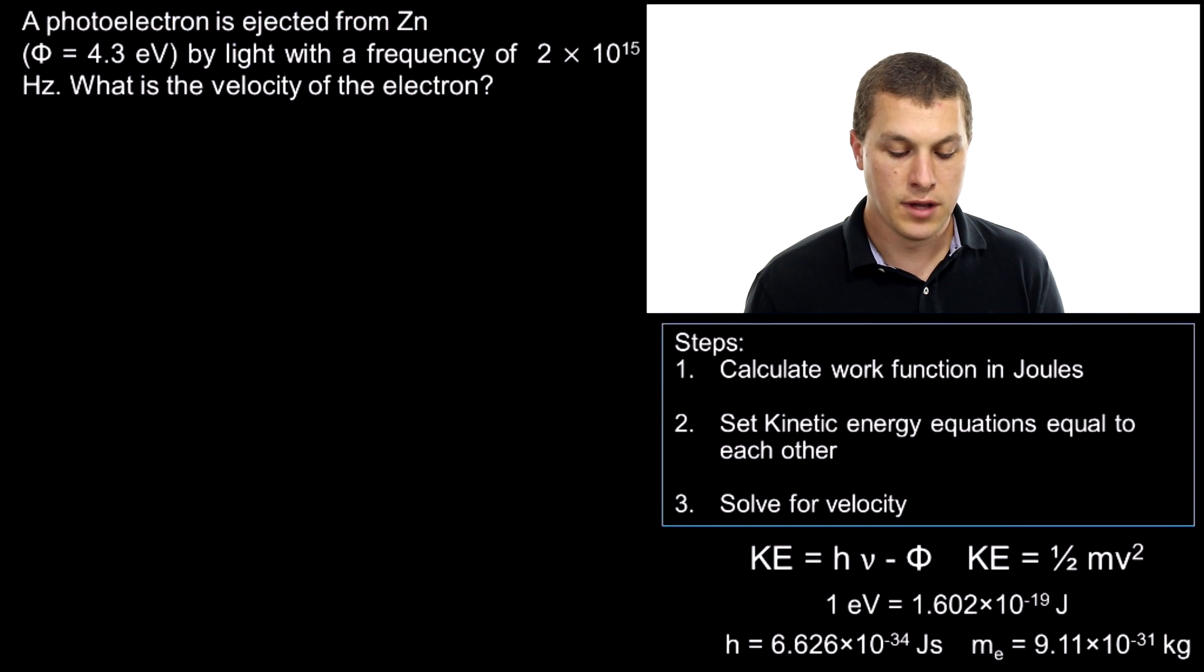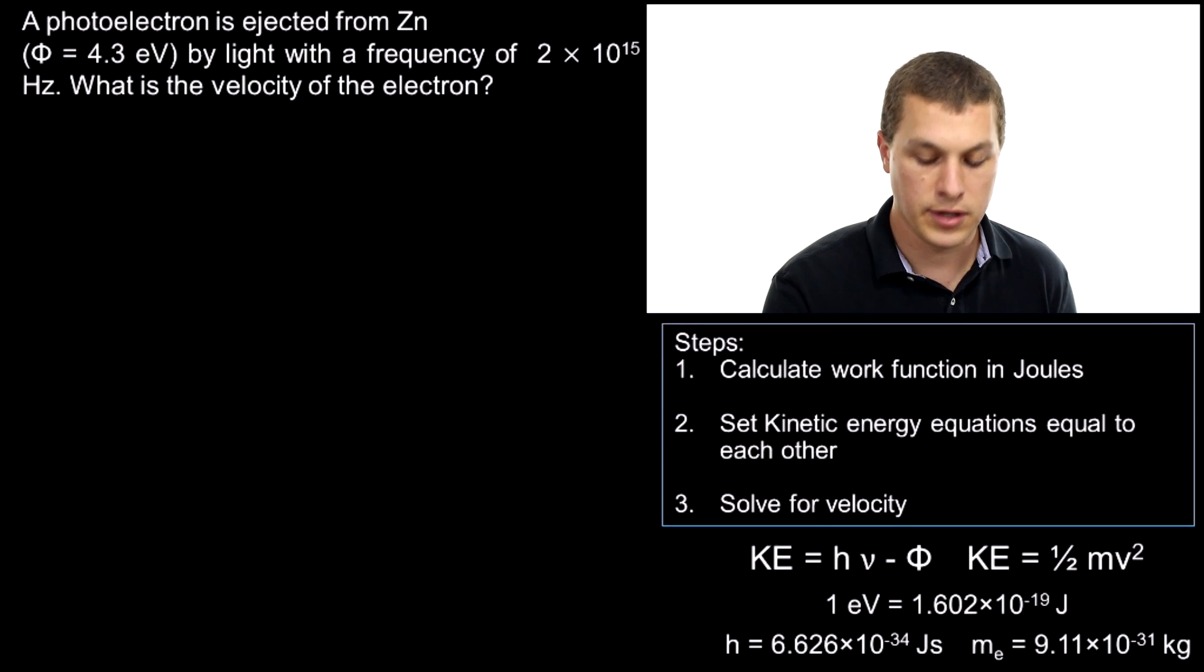The question might look like this: a photoelectron is ejected from zinc (Φ = 4.3 eV, that's our binding energy) by light with a frequency of 2×10¹⁵ Hz. What is the velocity of the electron? How do we solve a problem like this?